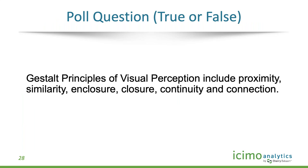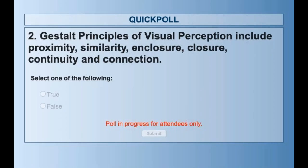Here's our next poll question — true or false: the Gestalt principles of visual perception include proximity, similarity, enclosure, closure, continuity, and connection. True or false?